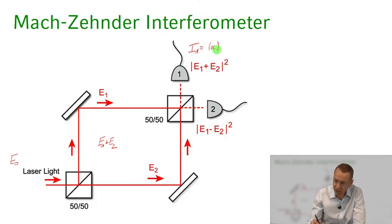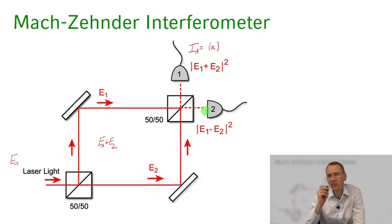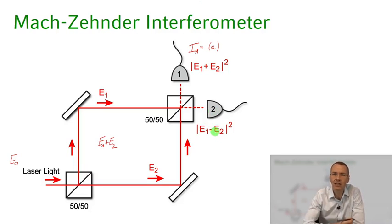For detector two, you measure the light transmitted in one direction and the light from path two being reflected at the beam splitter. There's a subtle minus sign that comes into play here — which we'll discuss in more detail when we treat the beam splitter — so the field on detector two is E1 minus E2, and the intensity is |E1 − E2|².